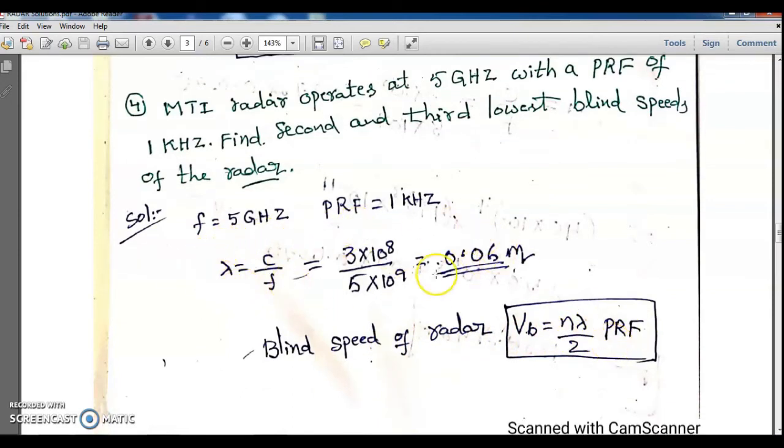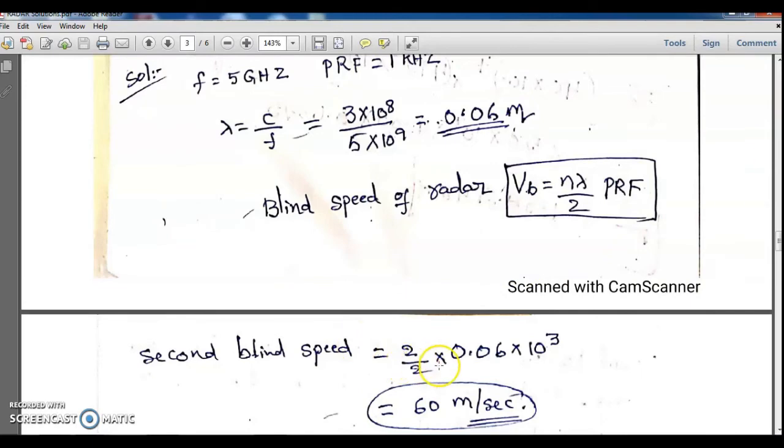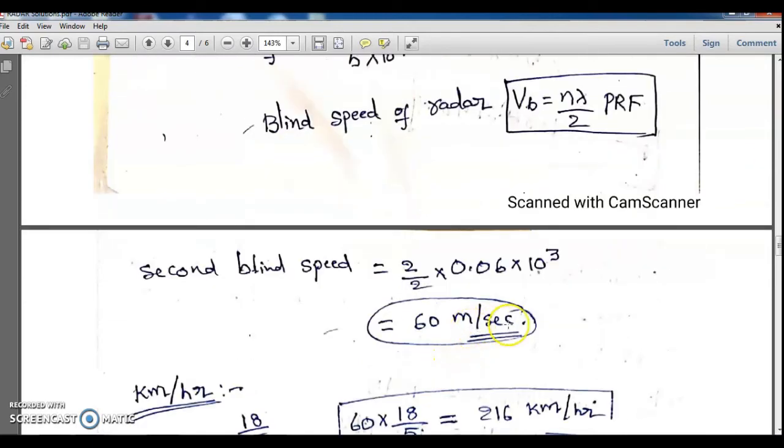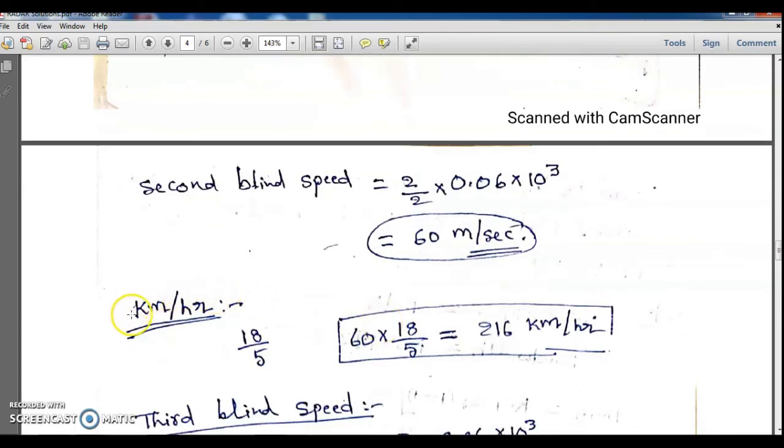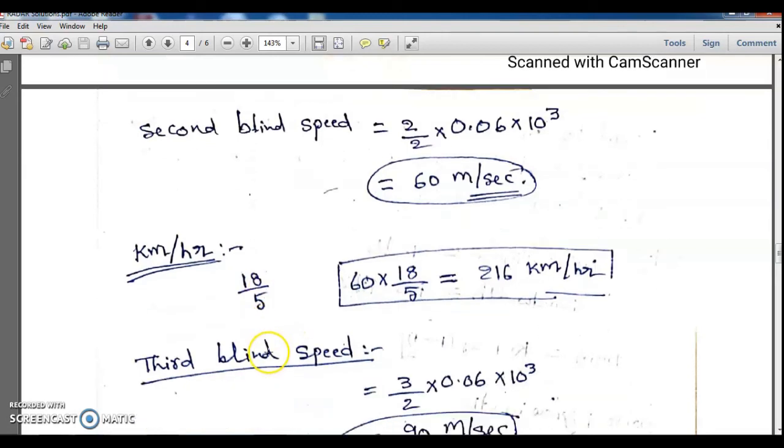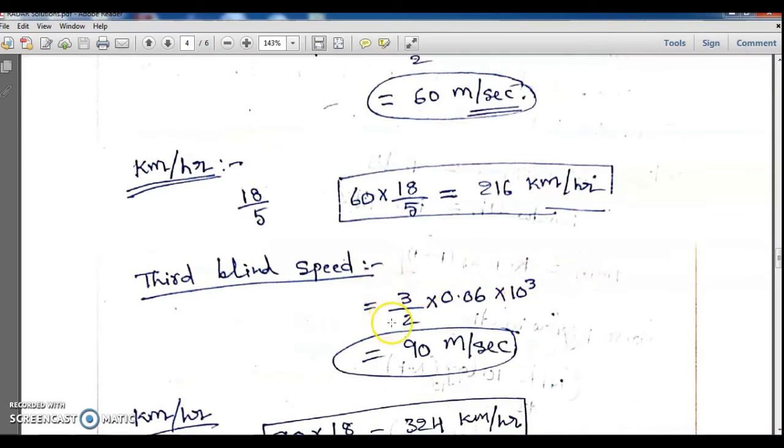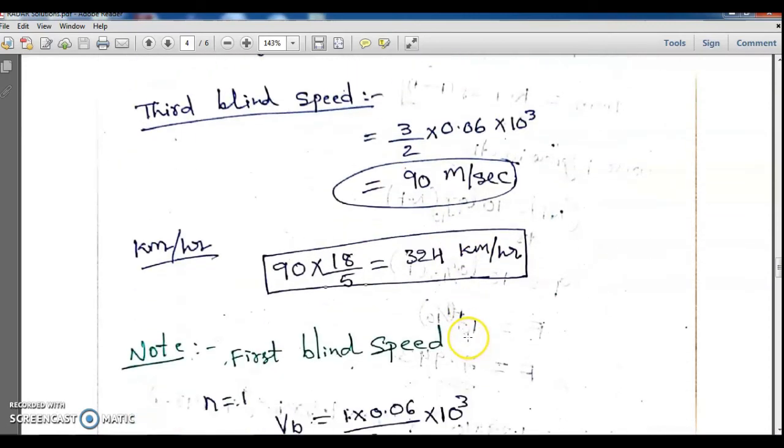We need to find lambda because frequency is given. Lambda equals 0.06 meters. Second blind speed is 60 meters per second, which in kilometers per hour is 216 kilometers per hour. Third blind speed is 90 meters per second, which in kilometers is 324 kilometers per hour.